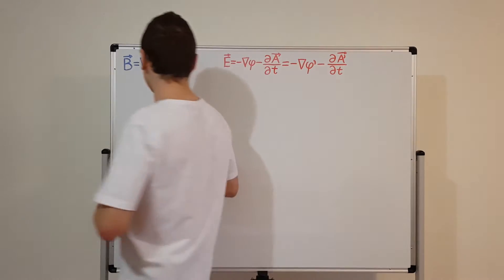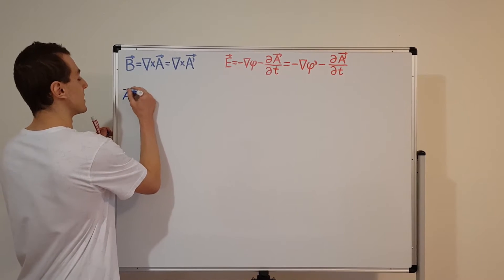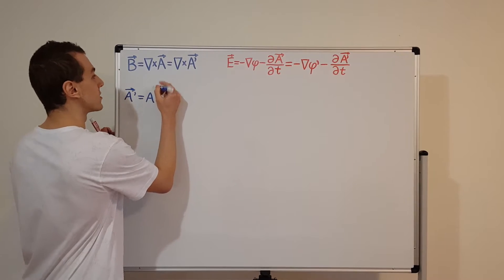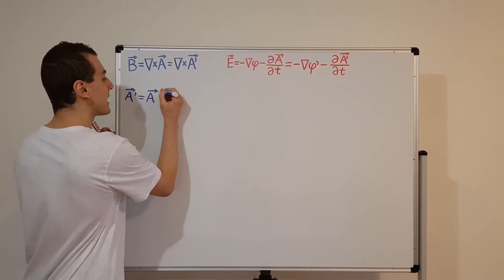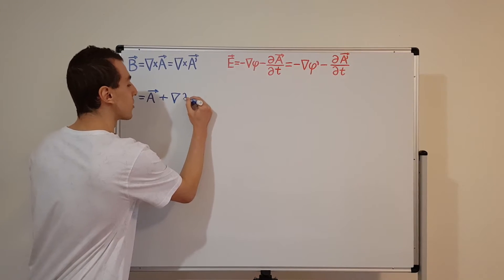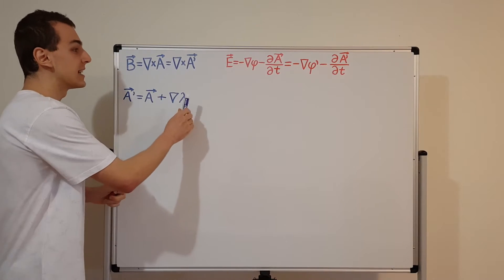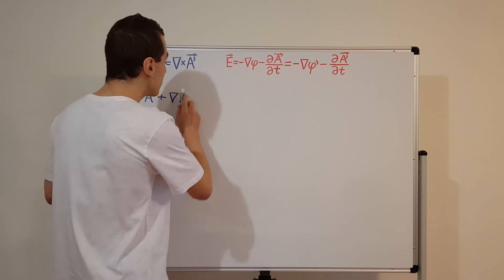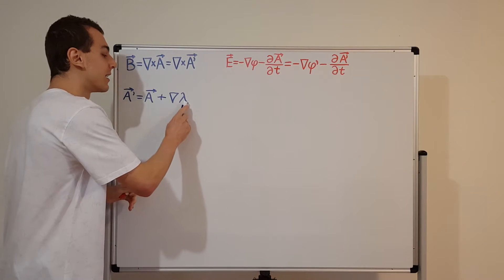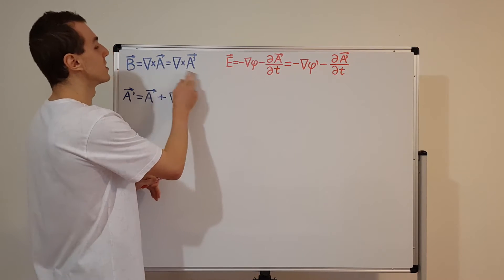What we can do is set A prime equal to the original A plus the gradient of some scalar field, which we'll call lambda. Lambda is some scalar field — it's kind of like phi, but we have freedom to choose what it is. If we can find a lambda such that this relationship holds, then these are gauge transformations of each other.